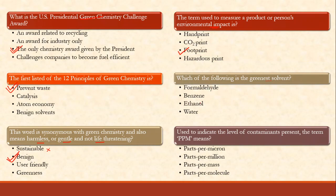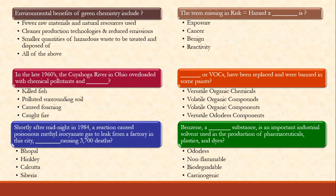Which of the following is the greenest solvent? Formaldehyde, benzene, ethanol — they all have certain properties. Benzene is carcinogenic and they are toxic somehow. But the greenest solvent is obviously water.